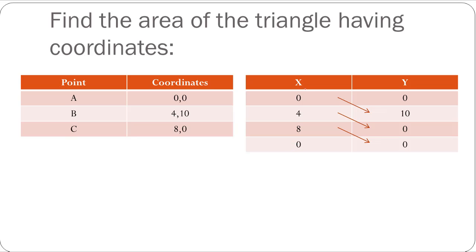Then what you have to do is multiply the first x coordinate with the next y coordinate, the second x coordinate with the next y coordinate, and the third x coordinate with the next y coordinate. So you multiply 0 with 10, 4 with 0, and 8 with 0, and add all these products. Similarly for y, you multiply 0 with 4, 10 with 8, and 0 with 0, and add all the products.